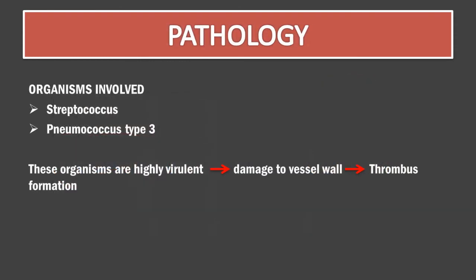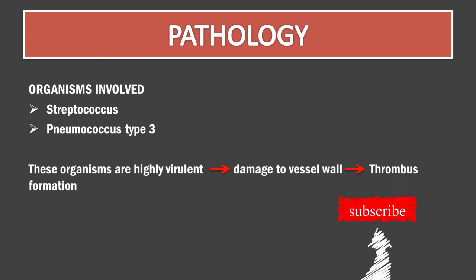Streptococcus and pneumococcus type 3 are the commonest organisms causing lateral sinus thrombosis. These organisms are highly virulent and cause damage to the vessel wall. The underlying collagen and fibrin in the vessel wall triggers the formation of a thrombus, which keeps accumulating in the lumen and may dislodge to various sites.